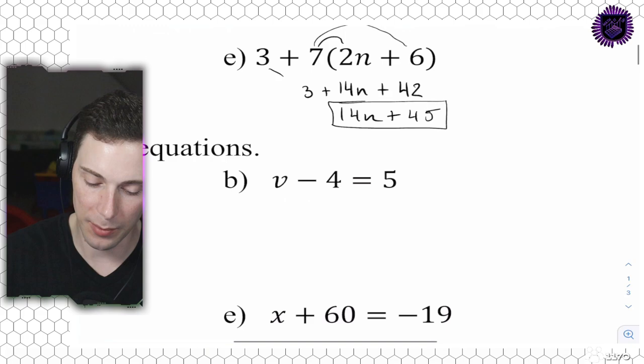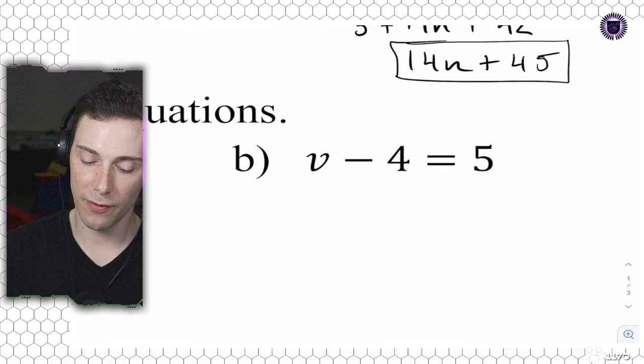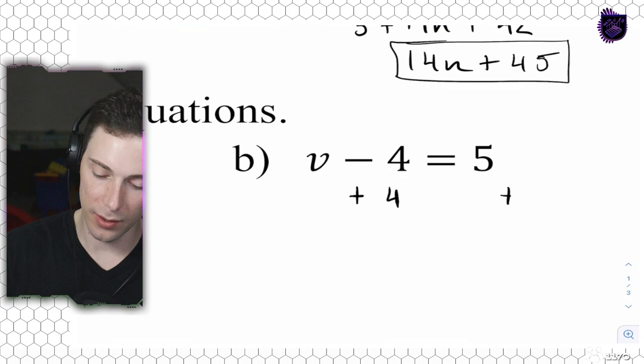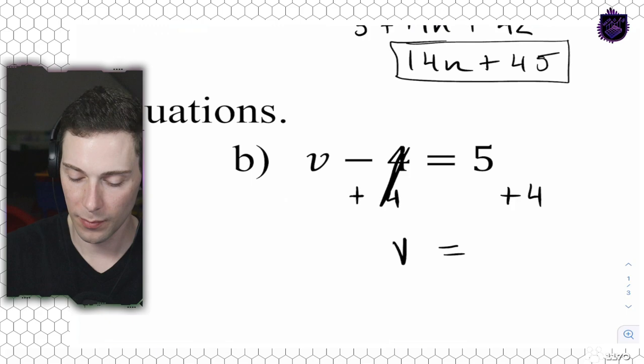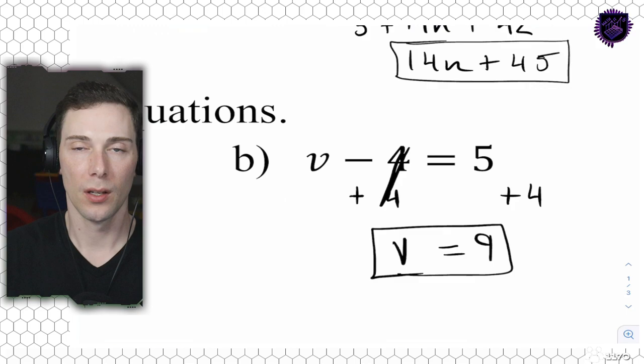I want to make sure you are following those steps. With this question we have V minus 4 equals 5. So we're going to add 4, and add 4 on this side of the equation. On this side they cancel out - they become redundant. And we're left with V equals 4 plus 5, which is 9. V equals 9.